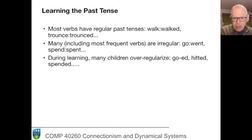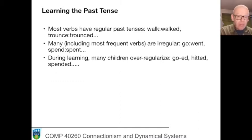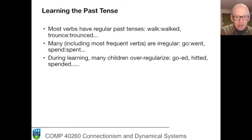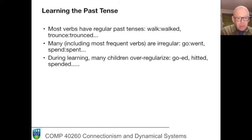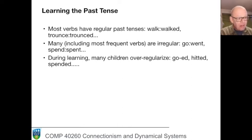Children exhibit a very predictable sequence. Initially they seem to learn each verb form as an exemplar — they learn 'walked' and they learn 'went', and they're doing just fine. But then there comes a point when they seem to have noticed that there's a regularity. They suddenly seem to disimprove on the irregular verbs and start using regularly inflected forms for the irregular verbs. So instead of 'went', we get children saying 'go'd', 'he hitted me', and 'I spended my money'. These forms come out after a period in which the child has been producing the correct forms. And this happens regularly — it's part of what it is to learn English.